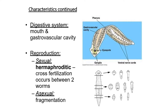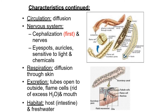Reproduction in Planaria: sexual reproduction is hermaphroditic and cross fertilization bhi hota hai — it occurs between two worms. Asexual reproduction hota hai fragmentation ke dwara. As shown in the diagram, if you cut Planaria, ek Planaria se itna sara Planaria fragmentation ke dwara praapta kiya ja sakta hai. Sexual reproduction mein do animals mein cross hota hai aur after fertilization worms bante hain. Ye animal hermaphrodite hota hai.